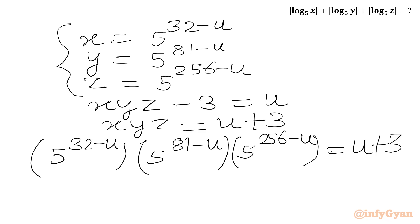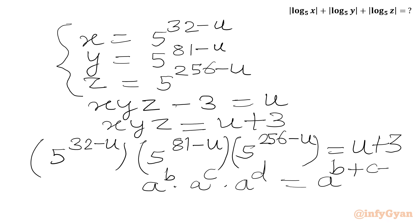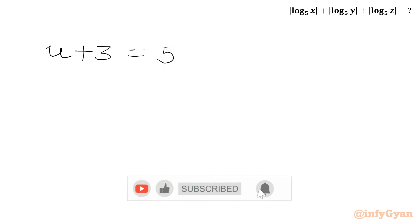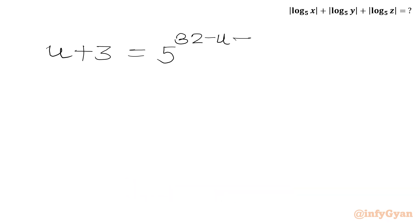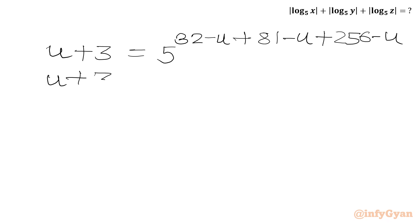Now we will use the exponent law: a^b times a^c times a^d equals a^(b+c+d). So we add the powers: 32 minus u, plus 81 minus u, plus 256 minus u. That gives us u plus 3 equal to 5 raise to the power (32 plus 81 plus 256 minus 3u), which simplifies to 5 raise to the power (369 minus 3u).